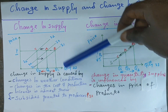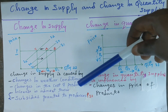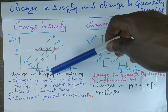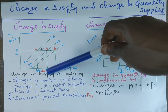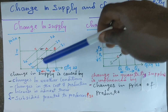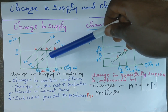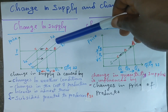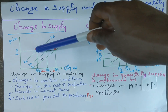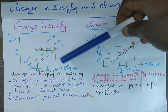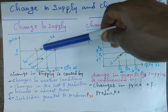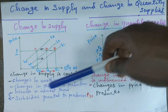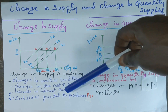When there are bad weather conditions, this will lead to a fall in the supply of agricultural products. This will cause the quantity supplied to fall from Q0 to Q2, and this is shown on the diagram where the supply curve shifts completely from SS0 to SS2, seen on the points where it moves from point A to point C.